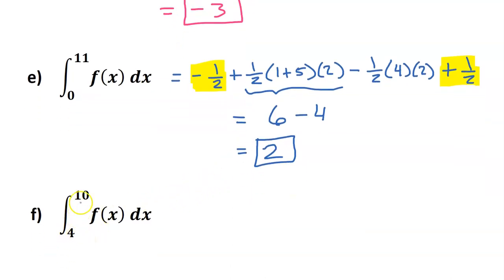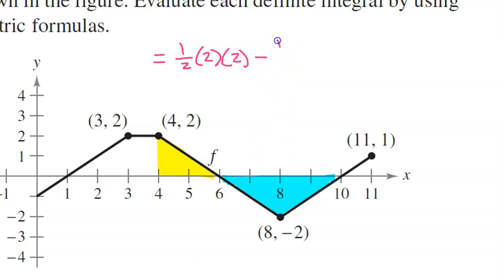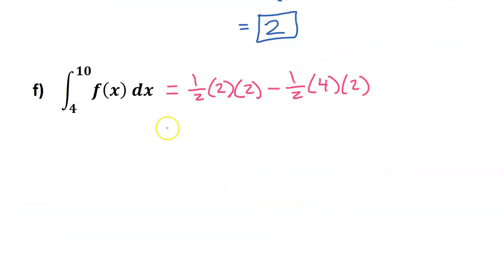For the net area from 4 to 10, we have a positive yellow triangle and a negative blue triangle. The positive triangle has base 2 and height 2: one half times 2 times 2 equals 2. The negative blue triangle has base 4 and height 2: one half times 4 times 2 equals 4. So 2 minus 4 gives a net area of negative 2.